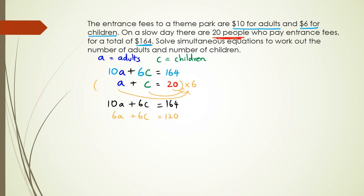And now I'm going to subtract the two of them. So the 6c and 6c will become 0. 10a minus 6a is 4a. 164 minus 120 will be 44, which means I have my equation as 4a equals 44. a is equal to 44 divided by 4. So a is equal to 11.